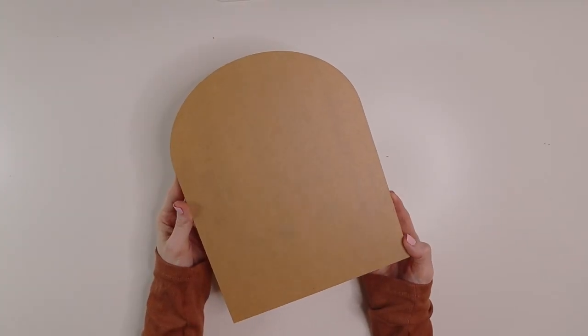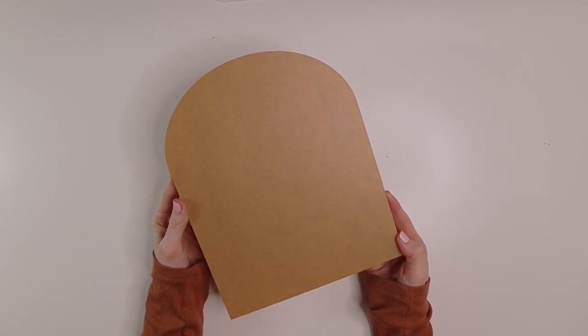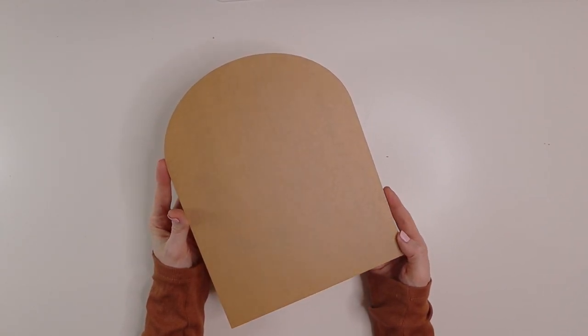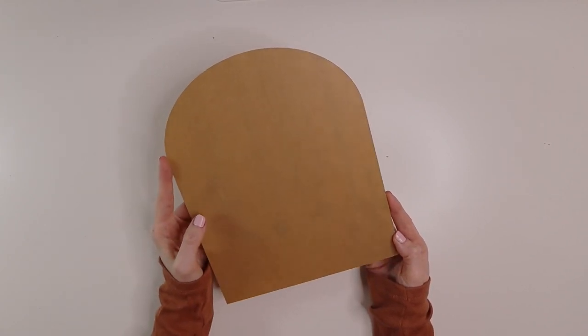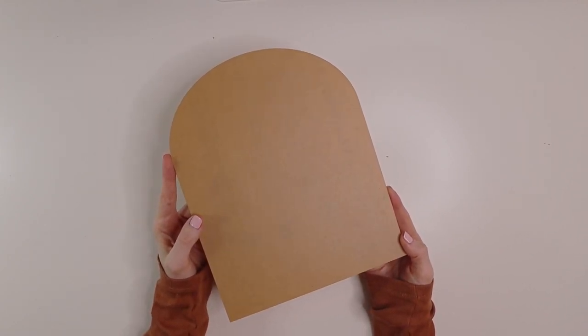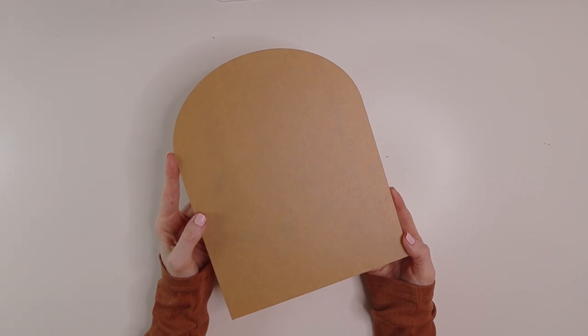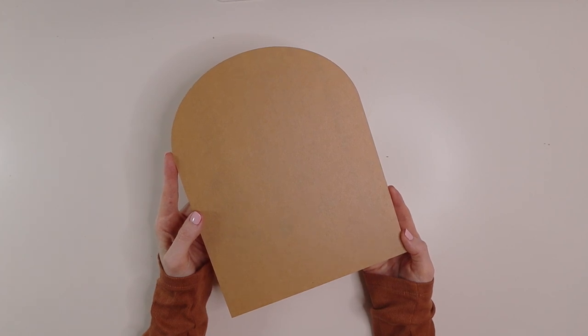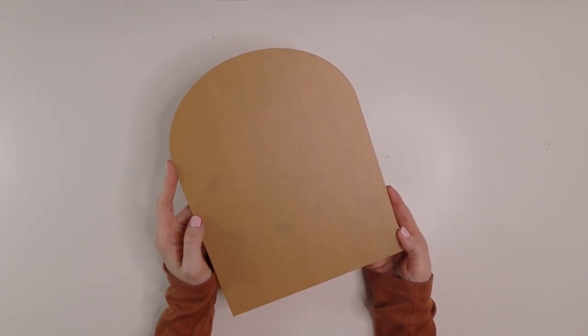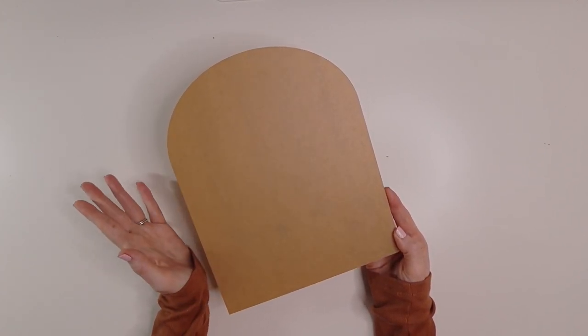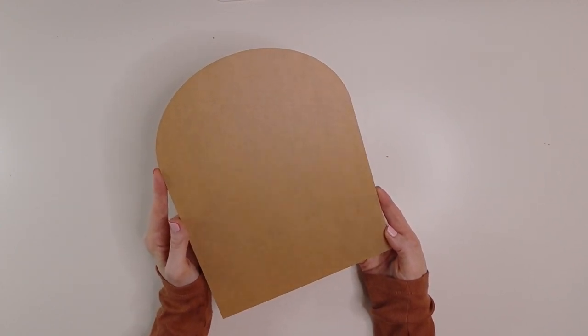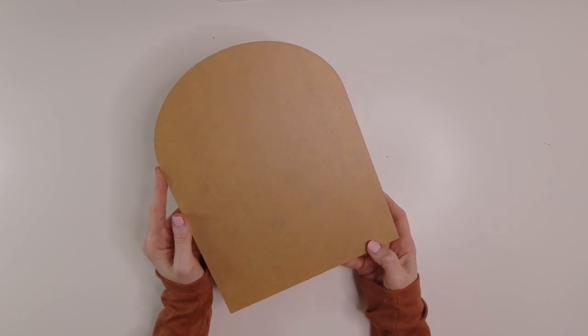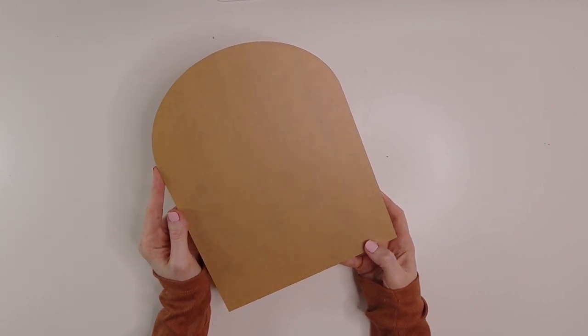The first thing you'll need for this project is your acrylic piece. This is just an 8x10 arch. I will link down below the company that I ordered it from. This shape is kind of hard to find online, but you can find them on Etsy and also from a plastics company as well. I would recommend going through Etsy because you can buy them one at a time that way, but if you are looking to do more than one, then you should definitely check out a plastics company.